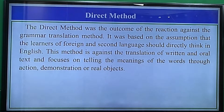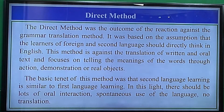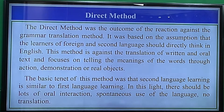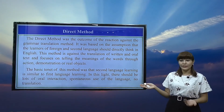The next point is the direct method. The direct method was an outcome of the reaction against the grammar translation method. It was based on the assumption that learners of a foreign or second language should directly think in that language. This method is against the translation of written and oral text and focuses on telling the meanings of words through action, demonstration, or real objects.